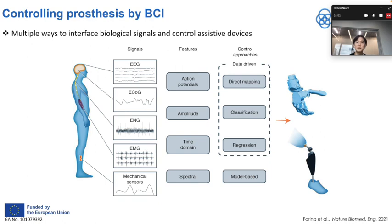For the data-driven approach, there are, for example, direct mapping, classification, and regression. They are all based on an upfront dataset to control the assistive devices.